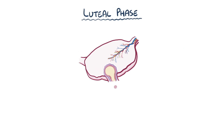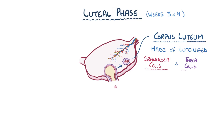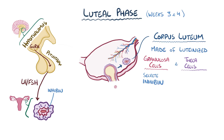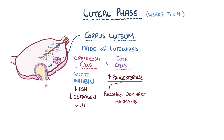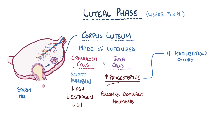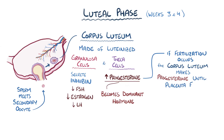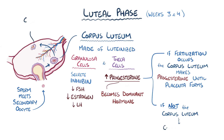The luteal phase makes up the second half of the menstrual cycle — weeks 3 and 4 of a 4-week cycle. Right after ovulation, while LH levels are still high, the remains of the follicle turn into the corpus luteum, which is made up of luteinised granulosa and theca cells. Luteinised granulosa cells secrete inhibin, which inhibits the pituitary gland from making FSH. Without FSH, oestrogen levels fall and LH goes back to pre-ovulation levels. Luteinised theca cells respond to the low LH concentrations by producing more progesterone, so overall progesterone surpasses oestrogen as the dominant hormone during the luteal phase. If fertilisation occurs, the corpus luteum continues making progesterone until the placenta forms. If fertilisation doesn't happen, the corpus luteum stops making hormones after around 10 days, becomes fibrotic, and is called the corpus albicans.